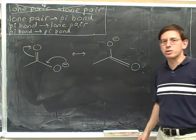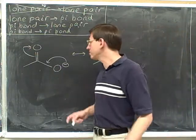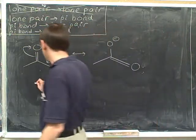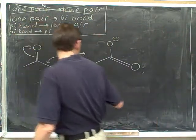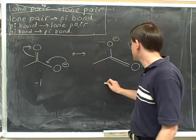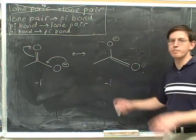Let's check to make sure we got the charges right. The net charge on the original picture is negative one, and the net charge on the right-hand structure is negative one. So those balance.